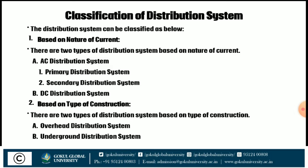First, based on the nature of current, there are two types. First is the AC distribution system, which is again divided into two parts: primary distribution system and secondary distribution system. Second is the DC distribution system.